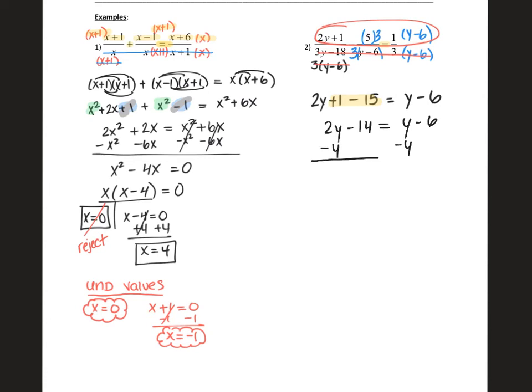This one's not a quadratic, so it's actually a bit easier. Just subtract y on both sides. So we get 2y - y is y. y - 14 equals negative six. And add 14 on both sides. And we get y equals 14 minus six, which is eight.